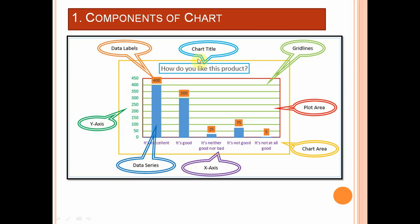For example, in this graph the title of the chart is 'How do you like this product?' — that is basically the heading, the topic on which we are making the chart. The first category is 'Excellent' with a value of 400. The column chart depicts categories on the x-axis and values on the y-axis. We also have a data series — the series we are going to plot in our graph. If we want to show the values on those series, those are called data labels. We can also see some lines behind these columns called grid lines, which are provided for readability of the data. For example, a value of 50 on the grid line helps us determine that a column somewhere between 0 and 50 has a value of 25.